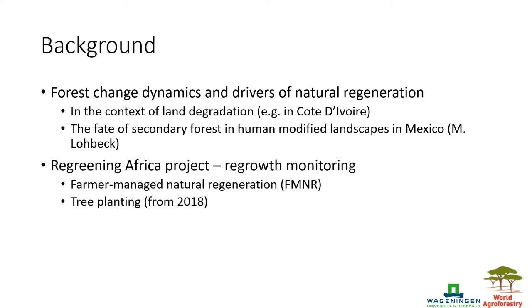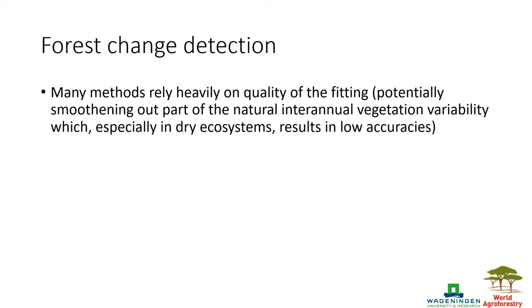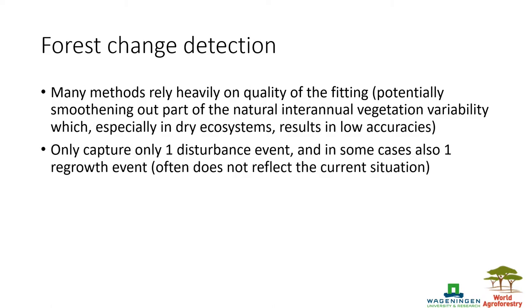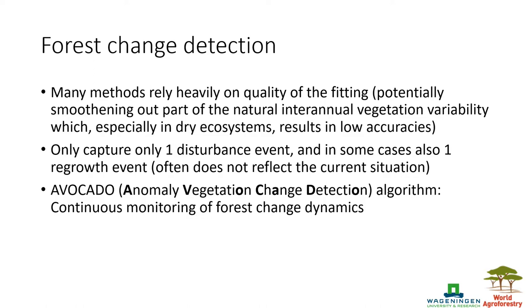I'm also working on the Regreening Africa project, which covers eight African countries and aims to reverse land degradation, mainly focusing on regrowth monitoring. Many forest change detection methods rely heavily on the quality of fitting, potentially smoothing out inter-annual vegetation variability, especially in dry ecosystems. They often also capture only one disturbance and regrowth event, which doesn't reflect the current situation and does not allow calculating secondary forest ages. Therefore, we developed a new method called AVOCADO — Anomaly Vegetation Change Detection.